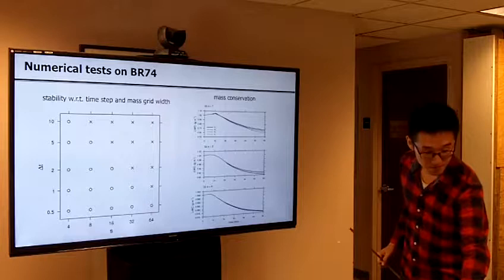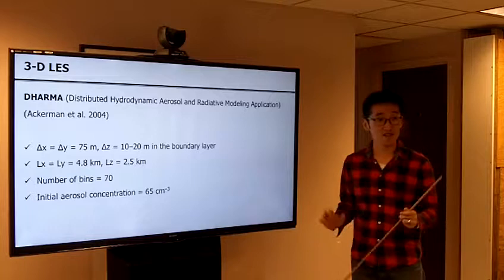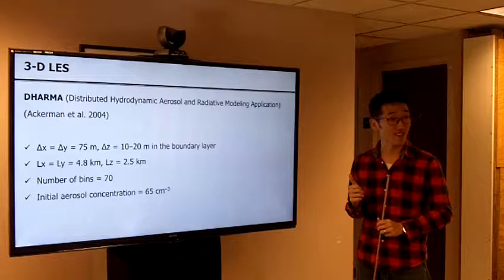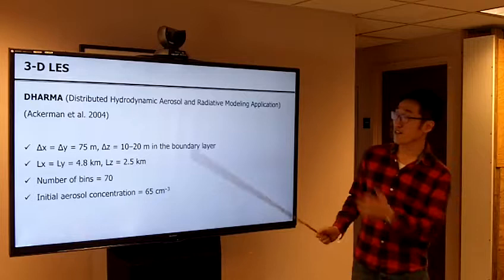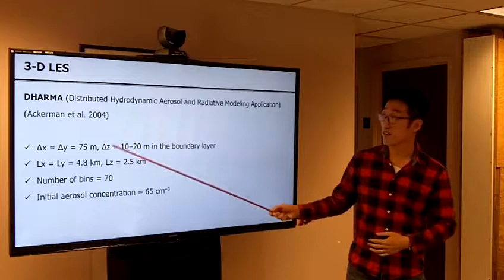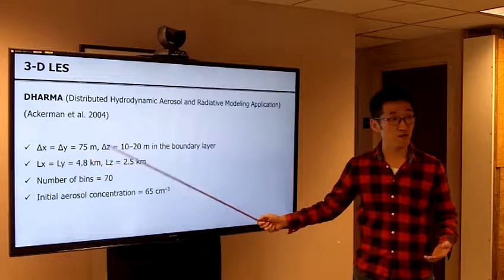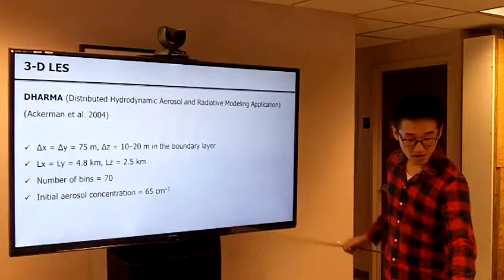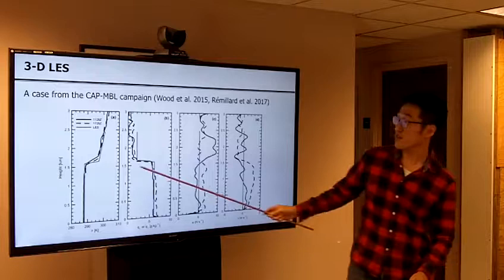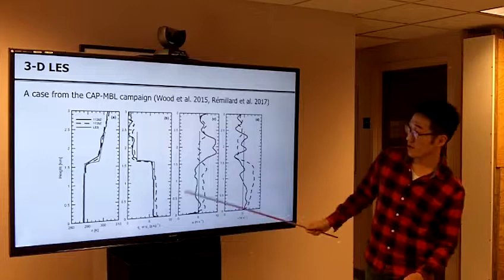Based on this simple box model testing, we conclude that the B00 scheme is the best. In the second stage, we test the collision-coalescence scheme with a 3D LES model — DHARMA, developed by GCMA. We used a typical model setup to simulate stratocumulus, with 70 vertical levels. The initial conditions come from a case study from the CAMB-R campaign.